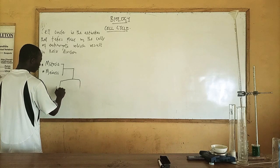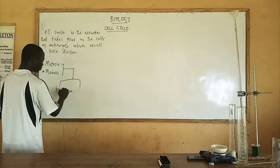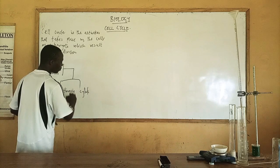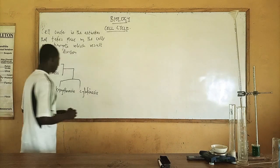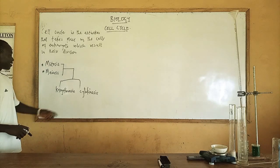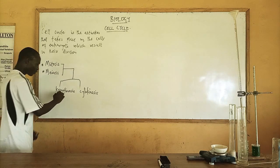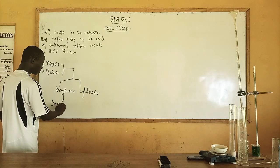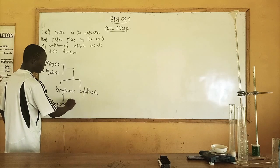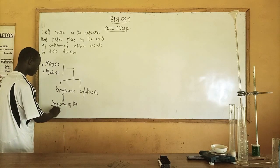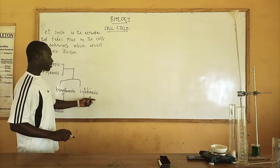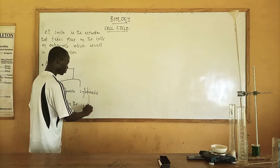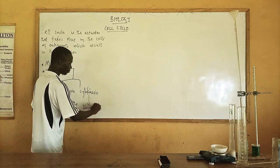The division of the cell is in two branches. You have karyokinesis, which simply means the division of the nucleus, and you have cytokinesis, which means the division of the cytoplasm.